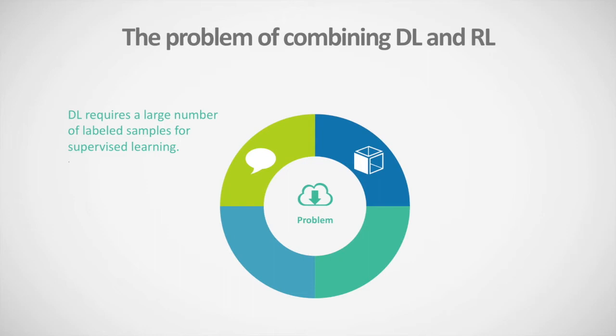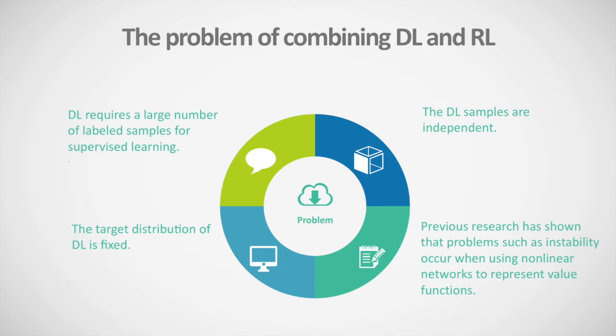Deep reinforcement learning (DRL) is a combination of deep learning and reinforced learning to learn control strategies directly from high-dimensional raw data. DQN is one algorithm of DRL, combining convolutional neural networks and Q-learning. However, there are some problems: first, DRL requires a large number of labeled samples for supervised learning; second, DRL samples are not independent; third, the target distribution of DRL is not fixed; and finally, instabilities occur when using non-linear networks to represent the value function.